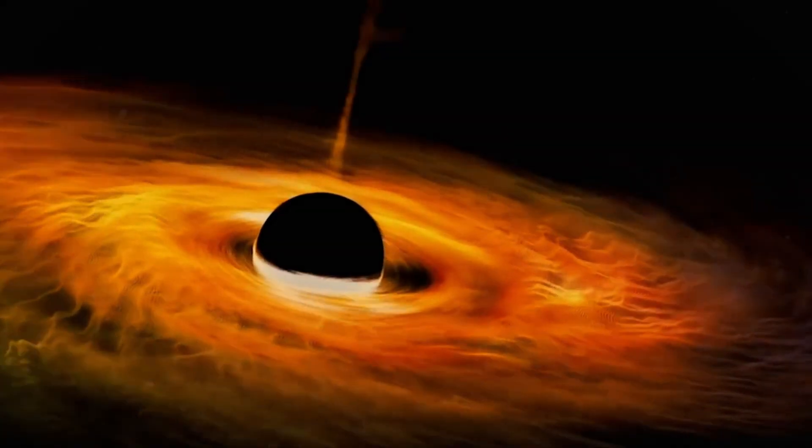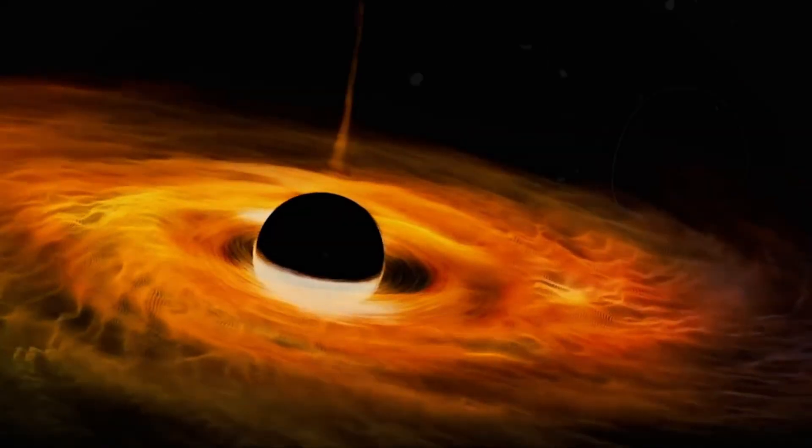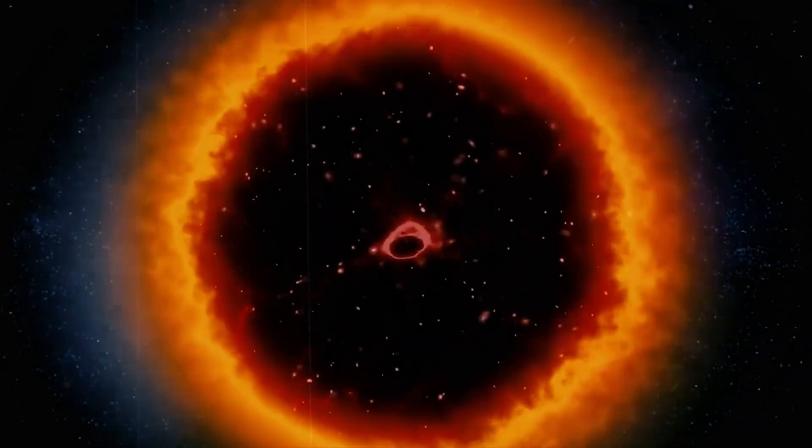By the timeline we've been taught, the deaths of the first stars or the mergers of small black holes couldn't have produced something this massive so soon after the universe's birth. To explain it, we'd need to rewrite the rulebook on how black holes form, possibly from scratch. And that wasn't even the biggest shock in the data set.